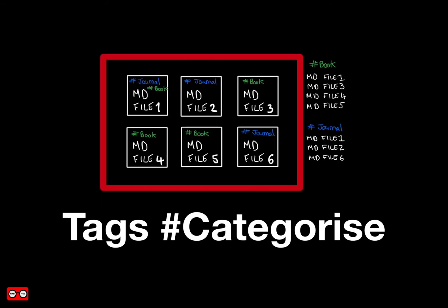Tags are keywords that you can use to categorize your notes. You can have one page with multiple tags, and this allows a piece of information to belong to more than one subject category at the same time. This allows for flexible relationship building between content and a view of information belonging to more than one category simultaneously.